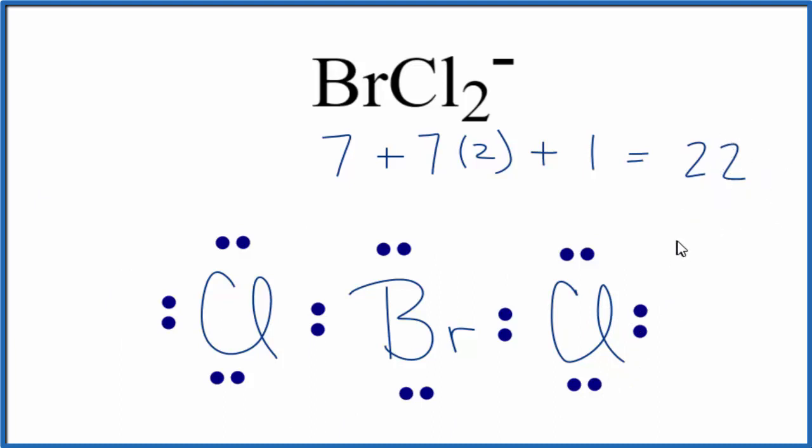So what we can do, Bromine can have an expanded octet. So we could squeeze in another pair of electrons right here, and that would have us use up all our electrons. And we would have octets for the Chlorine. And Bromine, that can have an expanded octet, so that's okay as well.